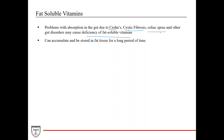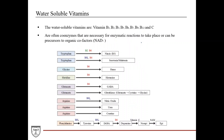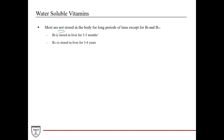Diseases such as Crohn's, cystic fibrosis, celiac sprue, and other gut disorders can cause a deficiency of fat-soluble vitamins. These patients can develop signs and symptoms of their direct pathology as well as fat-soluble vitamin deficiencies. Fat-soluble vitamins can accumulate and be stored in fat tissue for long periods. Water-soluble vitamins — B1, B2, B3, B5, B6, B7, B9, B12, and vitamin C — are often coenzymes for metabolic reactions or precursors to cofactors like NAD+. Most are not stored long-term, except B9, stored in the liver for 3–5 months, and B12, stored for 3–4 years.